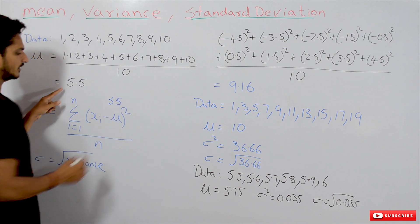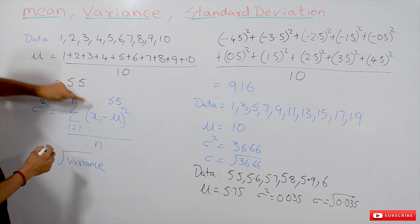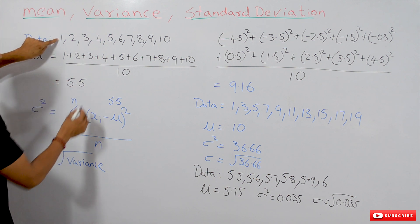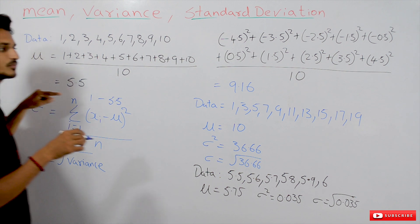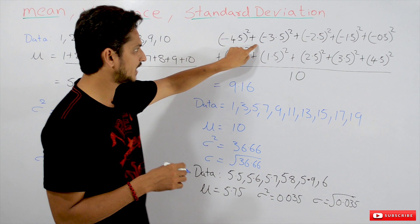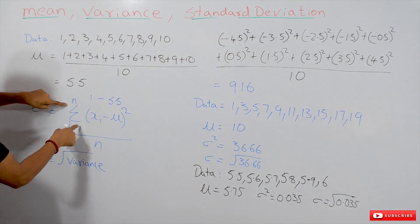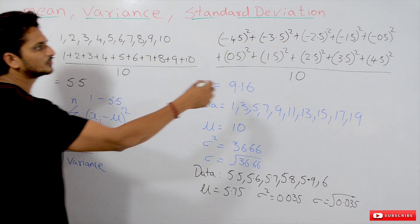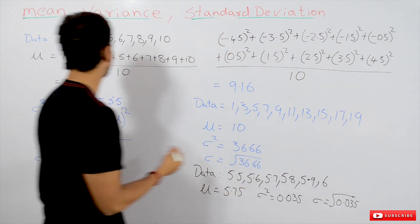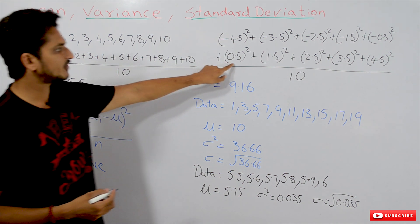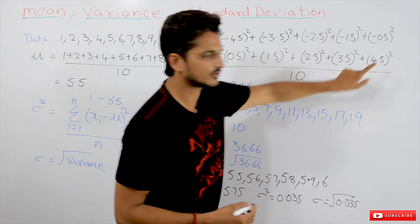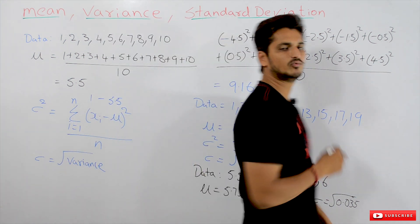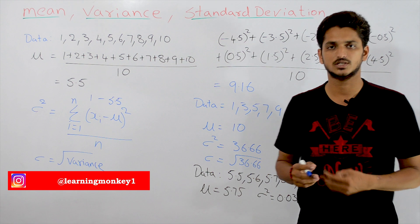The mean value mu is 5.5. x_i means take each data point one by one. For i = 1: (1 − 5.5)² = (−4.5)². Then (2 − 5.5)² = (−3.5)², (−2.5)², (−1.5)², (−0.5)², (0.5)², (1.5)², (2.5)², (3.5)², (4.5)². The summation of all those squared values is divided by 10 — this is how we calculate the variance.